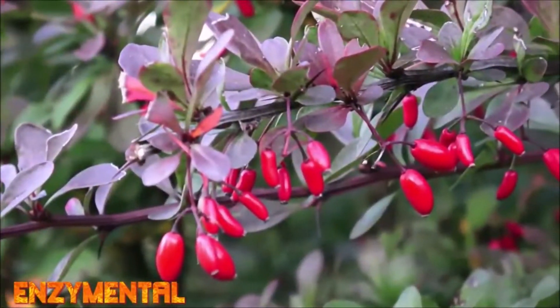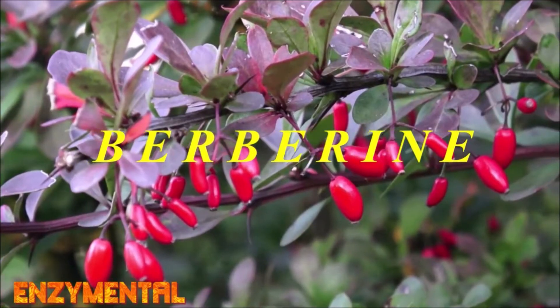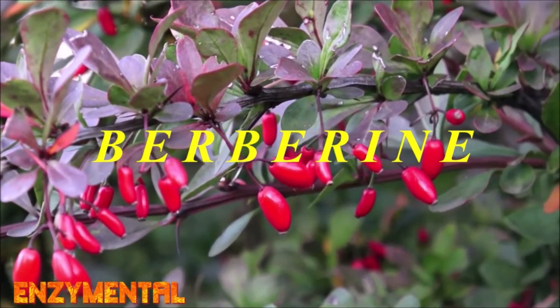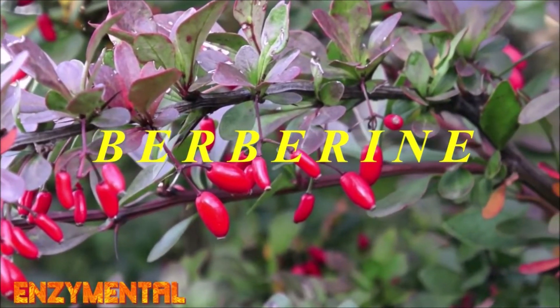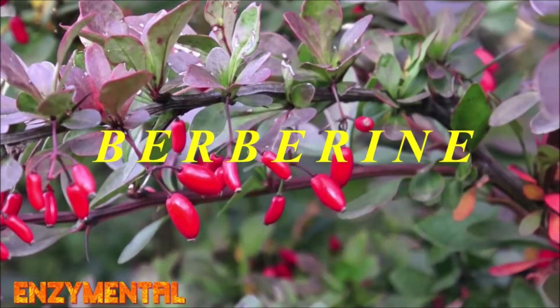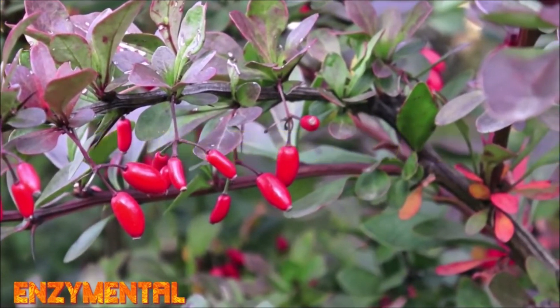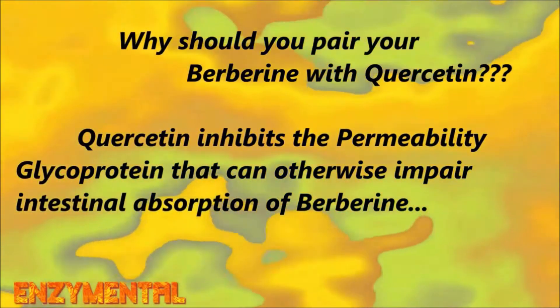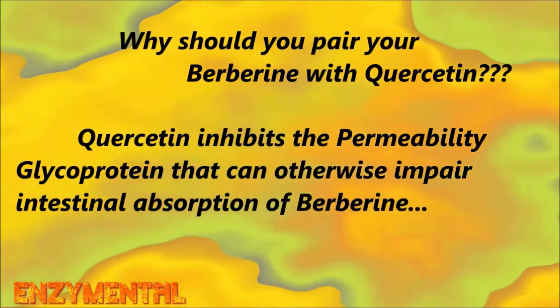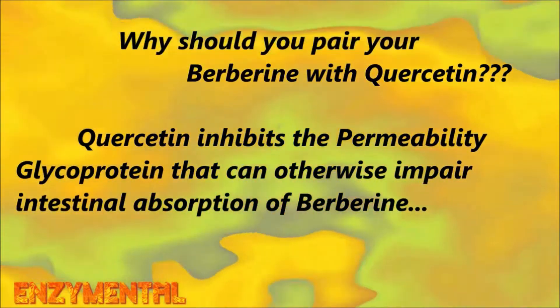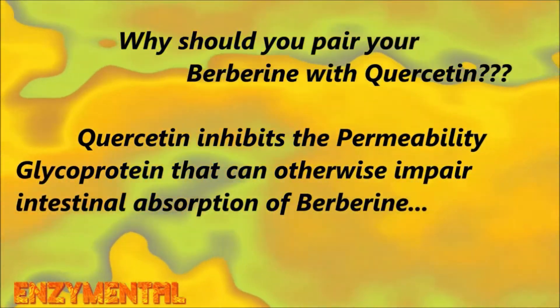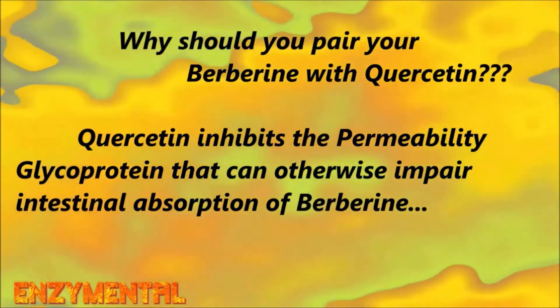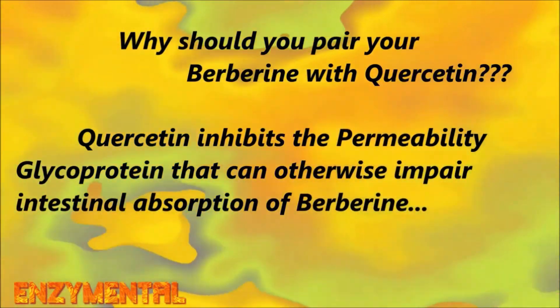Similarly, the golden yellow alkaloid berberine also activates this same metabolic cascade from sirtuin 1 to NAD, just like quercetin does. And as if that isn't enough incentive to take berberine and quercetin at the same time, one more reason is that quercetin dramatically enhances berberine absorption, specifically because quercetin inhibits the body's permeability glycoprotein, which can otherwise impair the intestinal absorption of berberine.